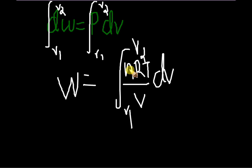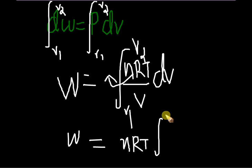We know that nRT is a constant, so I can write it out of the integral. Work done is equal to nRT integral V2, V1, V raised to minus 1, DV.